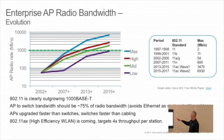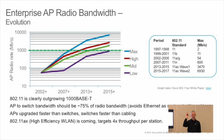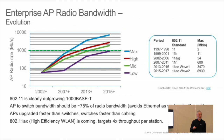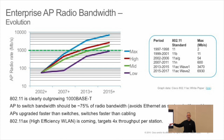I'll skip through this pretty fast — this is just a picture of how radio bandwidth is evolving, pulled from a Cisco white paper. PDF slides will come out later on. Dot-11 is outgrowing 1000Base-T. APs are going to upgrade faster than switches, which is faster than cabling. Dot-11ax is coming, targeting 4x throughput per station.